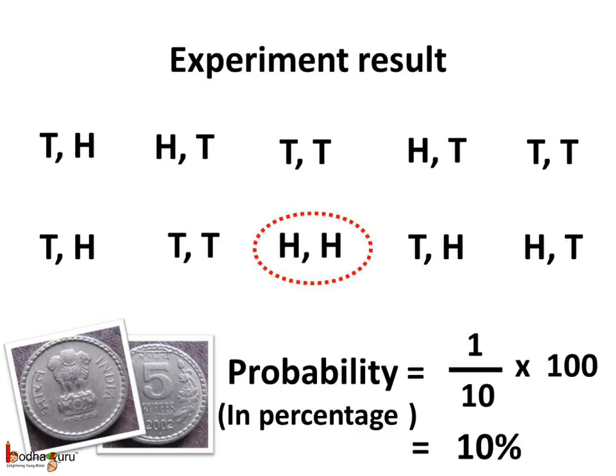Now, let's do an experiment. If you toss two coins simultaneously ten times and get both the heads only once, then the probability of getting two heads would be 1/10. That is, 1/10 multiplied by hundred if we want to express it in percentage. So, it is equal to ten percent.